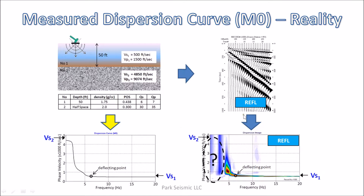As we can see here in the dispersion image, this low frequency part of the dispersion trend is completely missing. Although this is a modeling result, it is almost always the case, and this occurs because the receiver array length is too short for the bedrock depth. In order to have the pattern imaged at this low frequency part, the receiver array has to be very long.